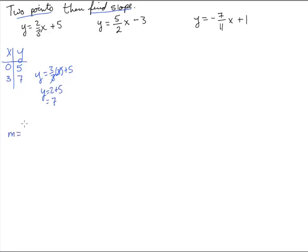Now we're going to find the slope. Remember, slope is y2 minus y1 over x2 minus x1. We get seven minus five is two, and three minus zero is three. So the slope is two-thirds.